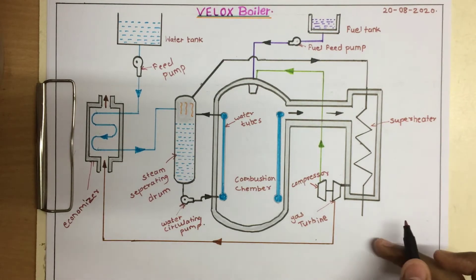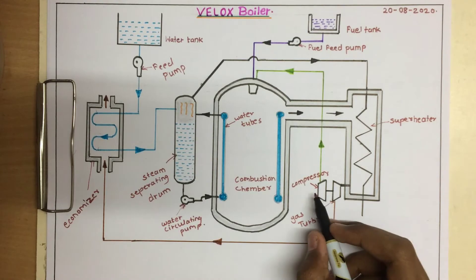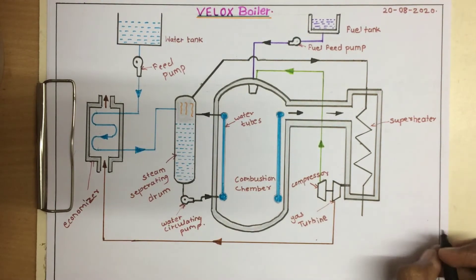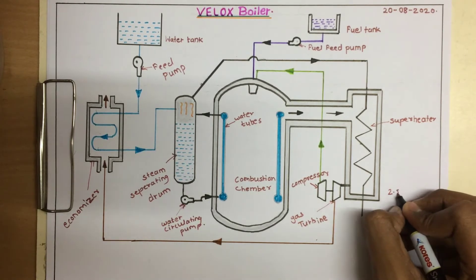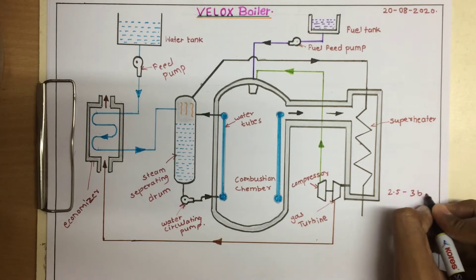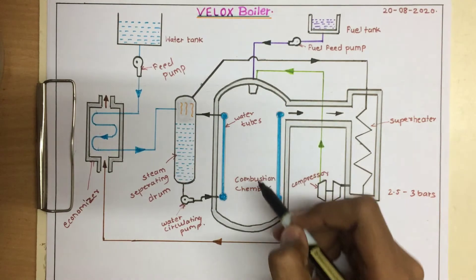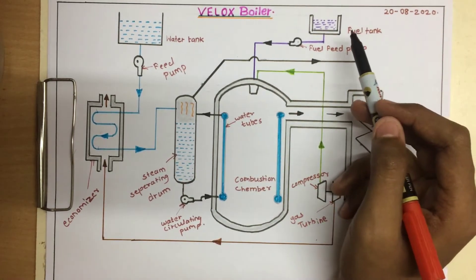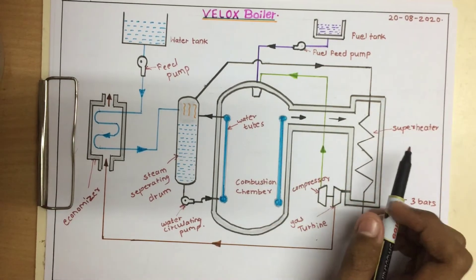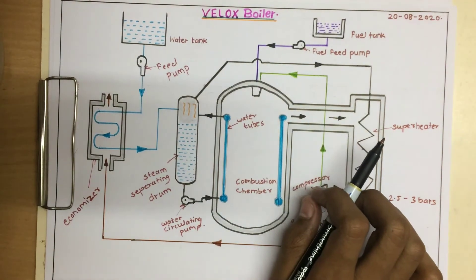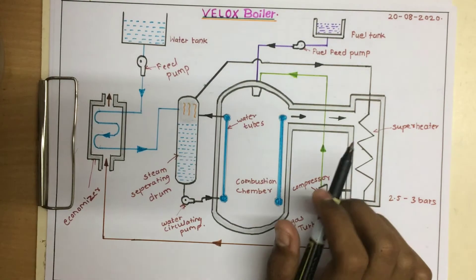Now we will talk about its working. Firstly, air is drawn inside the system by an axial compressor and this air is compressed at a pressure of 2.5 to 3 bars. Then this air is passed into the combustion chamber, where liquid fuel is also introduced. Combustion takes place and the air is at above sonic velocity, so combustion efficiency increases.